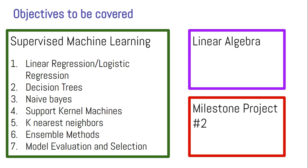We will study these algorithms in great detail — for certain algorithms we will write programs from scratch, and for others we will build projects. On the screen you can see: linear regression, logistic regression, decision trees, Naive Bayes, support vector machines, k-nearest neighbors, ensemble methods, and finally model evaluation metrics and model selection. After covering all of this, we will have a solid foundation in machine learning.